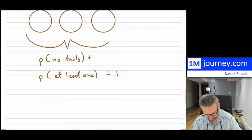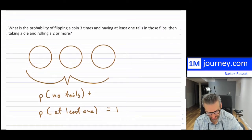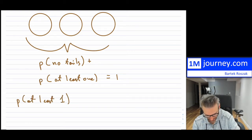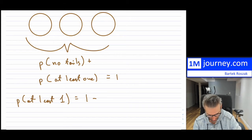So what we do is, if we have at least one tail, we'll rearrange this. So probability of at least one is equal to one minus the probability of no tails.